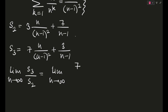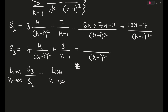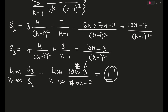Let's simplify one step. Combining terms over a common denominator of (n−1)²: the numerator of S3 becomes 7n + 3(n−1) = 10n − 3, and the numerator of S2 becomes 3n + 7(n−1) = 10n − 7. So S3/S2 = (10n − 3)/(10n − 7). Dividing numerator and denominator by n and taking the limit as n→∞, the constants vanish and we get 10/10 = 1.